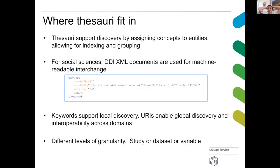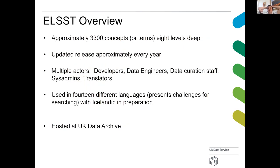ELST as a thesaurus has approximately 3,300 individual terms that go down about eight levels as a tree structure. We update a new version of ELST with some new additions and some deprecations about once a year. Thesaurus development isn't just about coders and programmers — there are lots of different actors involved. Data curation staff use keywords on a daily basis to assign to metadata; sys admins; and in the case of ELST, where we currently have 14 languages, we have a team of translators who work remotely. Icelandic is coming soon as well, so we have a diverse and enthusiastic community that supports and develops ELST.